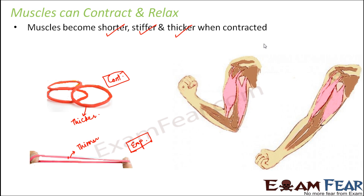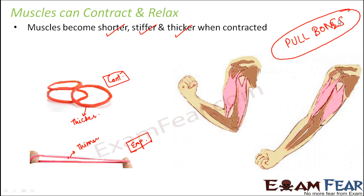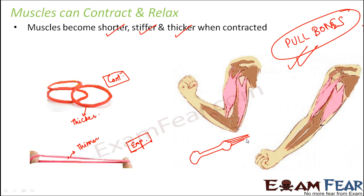Muscles do not push bones — they can only pull bones. So if you have a bone here with a muscle on one side, when that muscle contracts it will pull the bone in that direction, causing your hand to move in one way as shown in this picture.